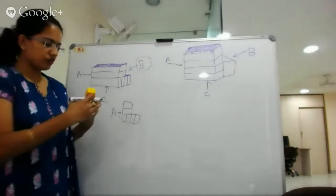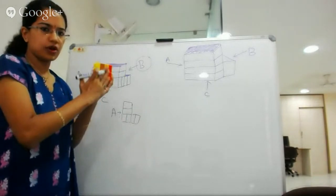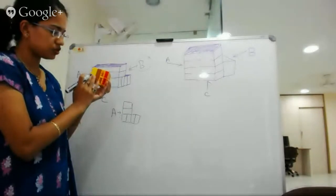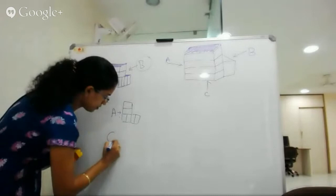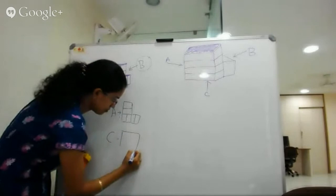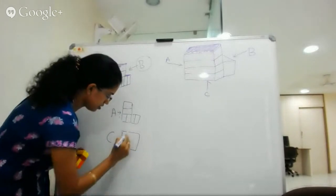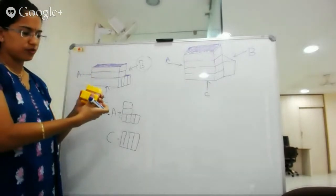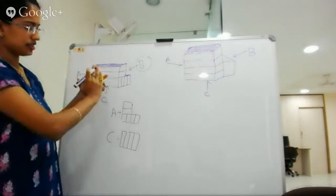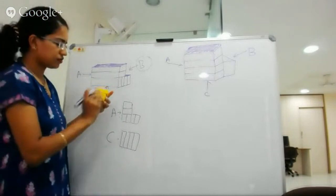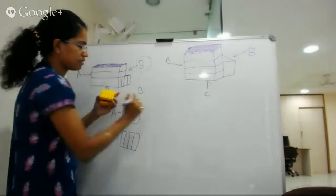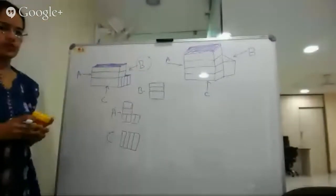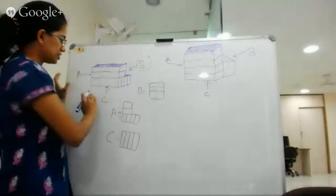Now for side C, which is on the bottom: you have one piece that is split into two small parts, giving one, two, three, and four partitions. You have four vertical partitions in total for side C. Finally, for the side view, you have one big partition and two small partitions visible from that angle — one big block followed by two smaller ones.